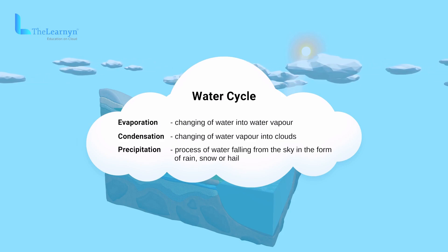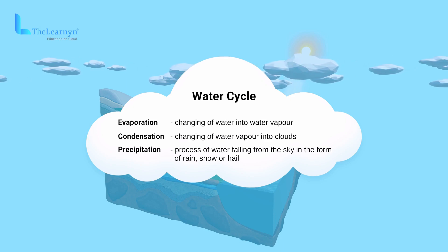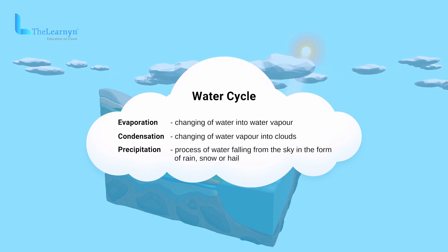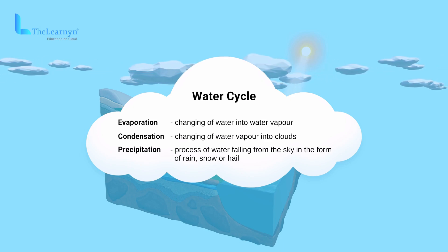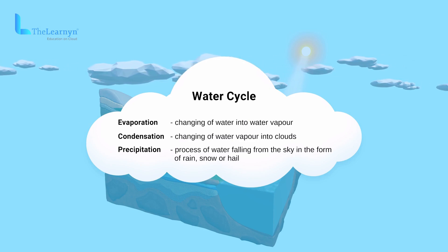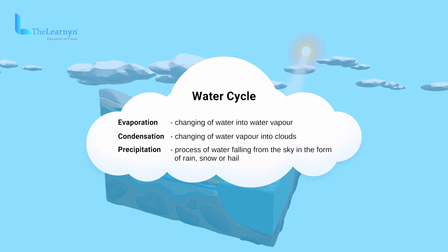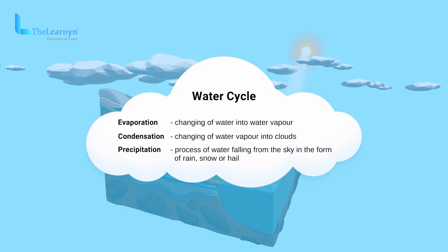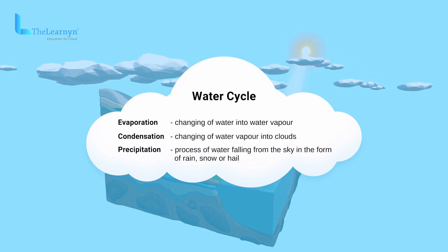Precipitation: the process of water falling from the sky in the form of rain, snow, or hail is called precipitation. Water evaporates into the sky and the cycle continues.